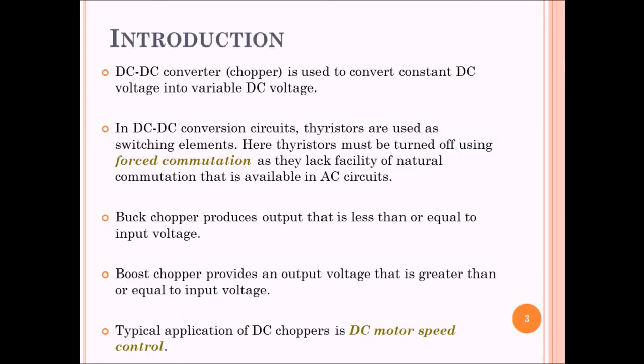As we all know, choppers are nothing but DC to DC converters. That means they change the output voltage which we get across the load. This is done with the help of thyristors. We do the forced commutation. As a result the output voltage across the load varies. We categorize the DC to DC converters or choppers as buck chopper, boost chopper, and buck-boost chopper.